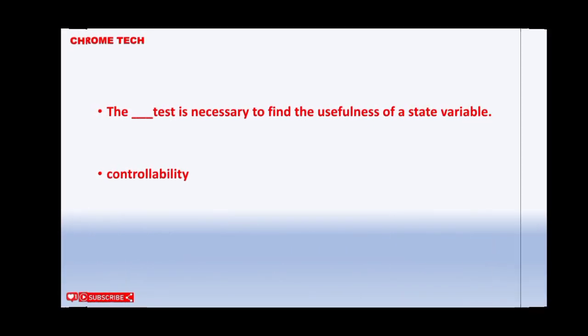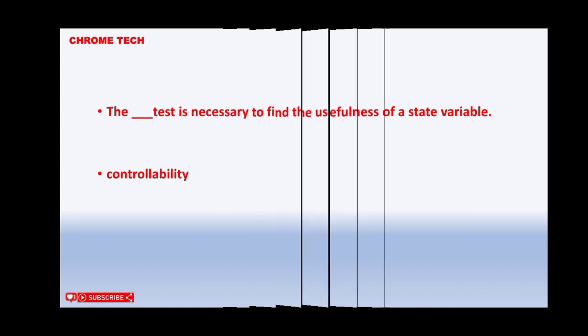Next question. The test is necessary to find the usefulness of a state variable. Controllability is the correct answer.